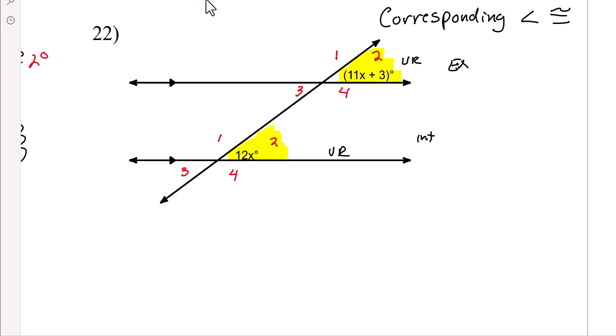So we can set 12x in degrees equal to 11x in degrees plus 3 degrees. And since 11 is smaller than 12, I'll go ahead and subtract 11x in degrees. So 12 subtract 11 is 1, so we can just leave an x by itself. And then the only thing we have left is x is 3 degrees, and then we have to check it.